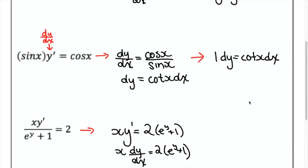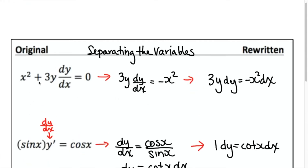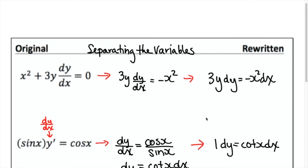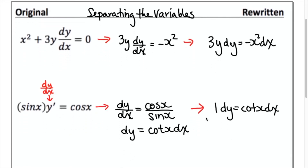For example, given x squared plus 3y dy/dx equals 0 — this is complicated because it has both x's and y's. I bring the x squared over to the other side, leaving 3y dy/dx equals negative x squared. Then I bring the dx over, giving me 3y dy equals negative x squared dx. I've separated the variables: y's on one side, x's on the other. We'll use this strategy to help find antiderivatives.